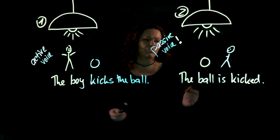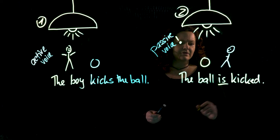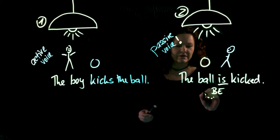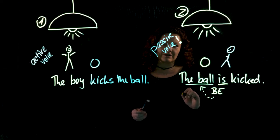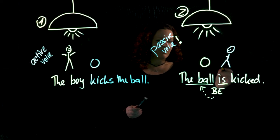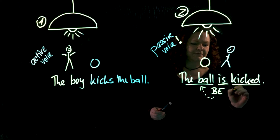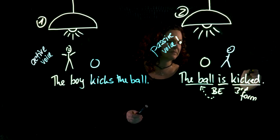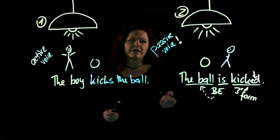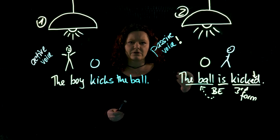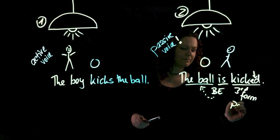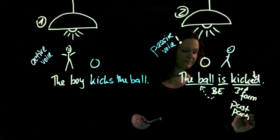Let's take a quick look at how it is formed. We always have a form of 'be.' The form of 'be' is adjusted by the subject of the sentence. We also always have the third form of the verb. The third form can be the regular one with '-ed,' or it is the irregular third form you learned at school. We call this form the past participle.